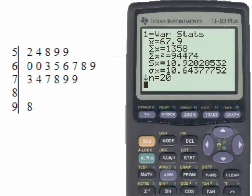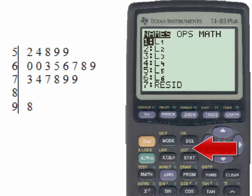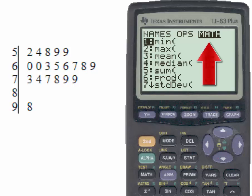We will go to the list button, which is found above the stat key, so we'll use the yellow second key and list, and now we'll go to the math menu.